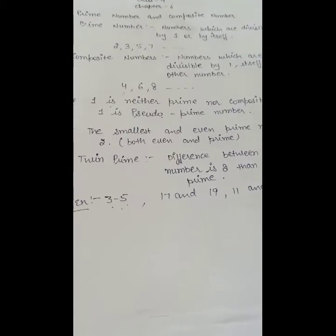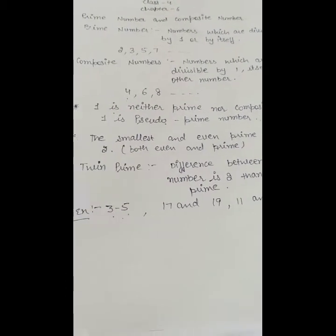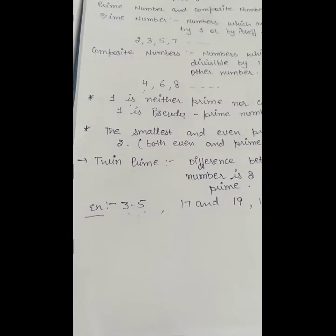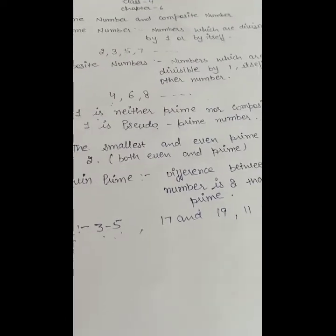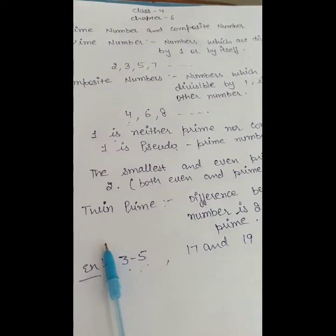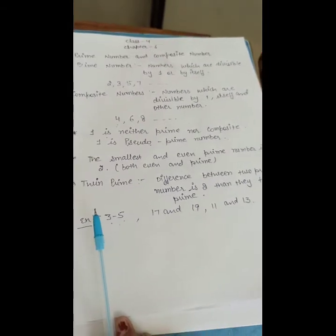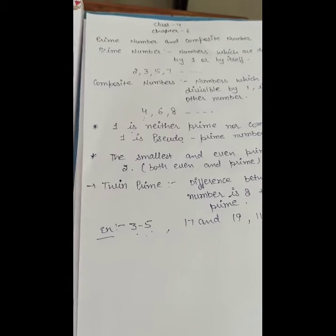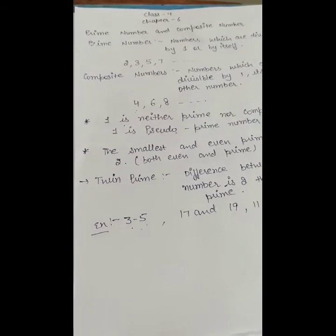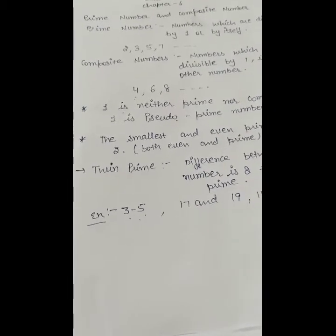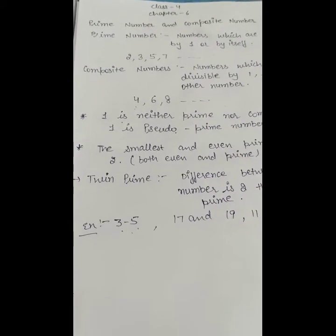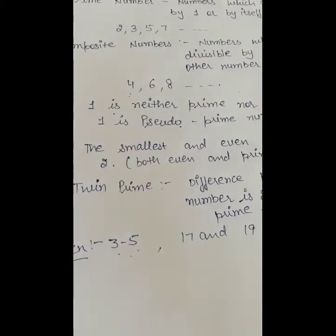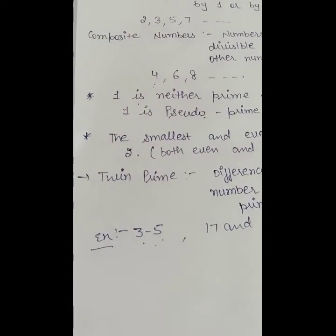Once again: prime numbers are those which are divisible by 1 and itself. Composite numbers are those which are divisible by 1, itself, and another number. One is neither prime nor composite, so we call it a pseudo prime number. The smallest and even prime number is 2. If the difference between 2 prime numbers is 2, then they are twin primes.